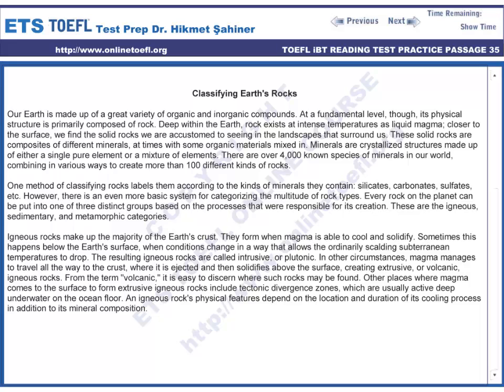There are over 4,000 known species of minerals in our world, combining in various ways to create more than 100 different kinds of rocks. One method of classifying rocks labels them according to the kinds of minerals they contain — silicates, carbonates, sulfates, etc. However, there is an even more basic system for categorizing the multitude of rock types. Every rock on the planet can be put into one of three distinct groups, based on the processes that were responsible for its creation. These are the igneous, sedimentary, and metamorphic categories.